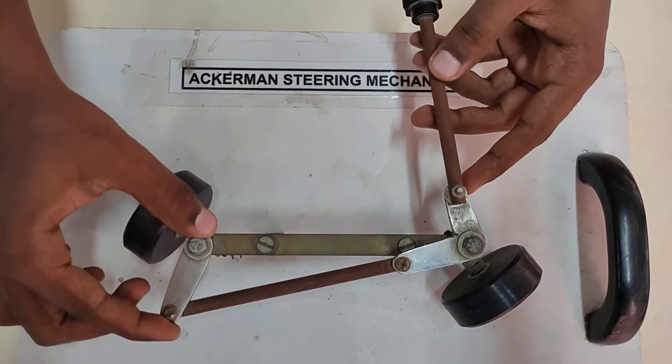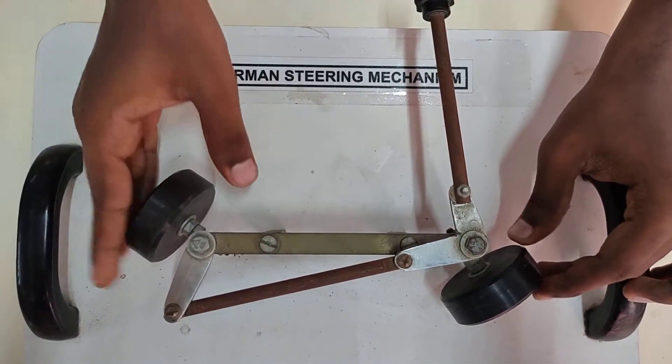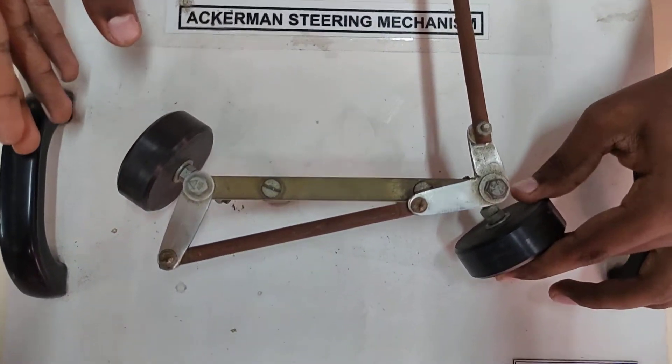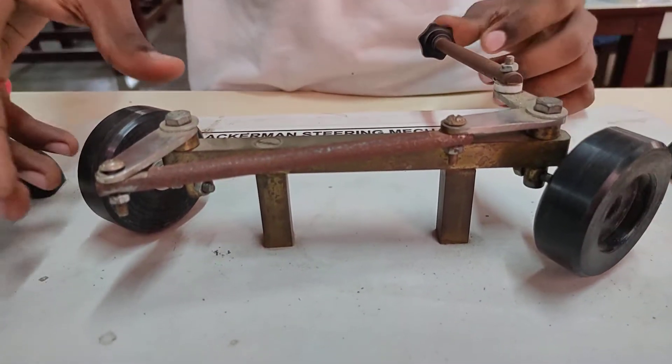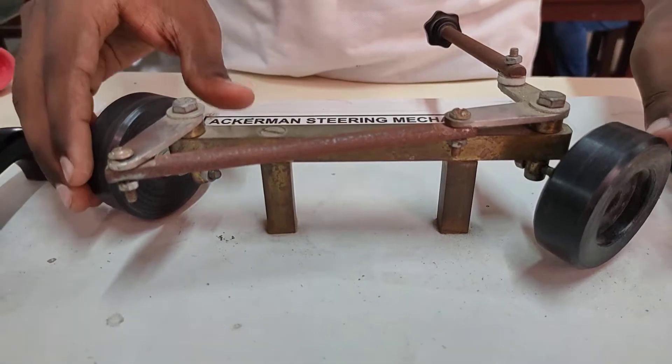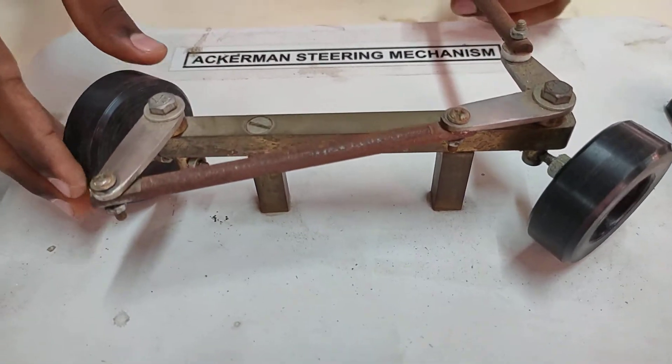This extension of the rod makes the outer wheel turn at a different radius than the inner wheel. The inner wheel must have a tighter radius and the outer wheel a wider radius for smooth turning.